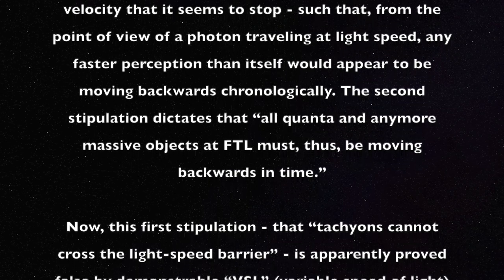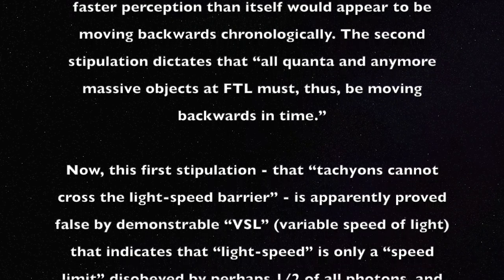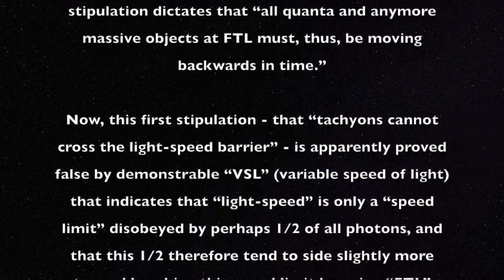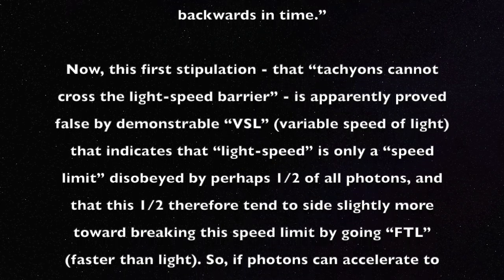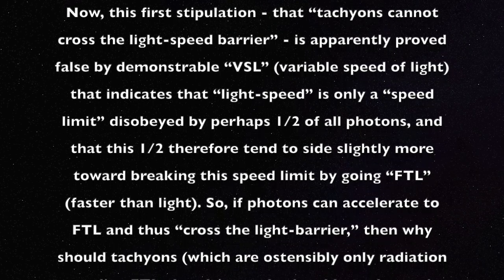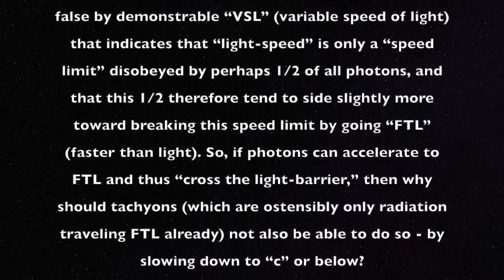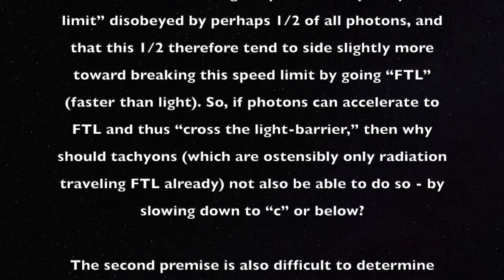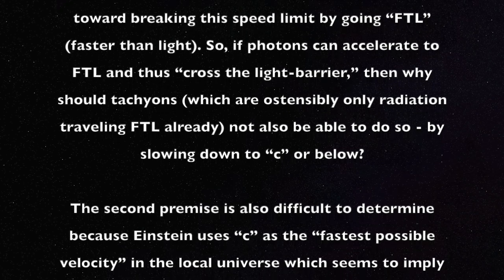Now, this first stipulation — that tachyons cannot cross the light speed barrier — is apparently proved false by demonstrable VSL, variable speed of light, that indicates that light speed is only a speed limit disobeyed by perhaps one half of all photons, and that this one half therefore tend to side slightly more toward breaking this speed limit by going FTL, faster than light. So if photons can accelerate to FTL and thus cross the light barrier, then why should tachyons, which are ostensibly only radiation traveling FTL already, not also be able to slow down to c or below?